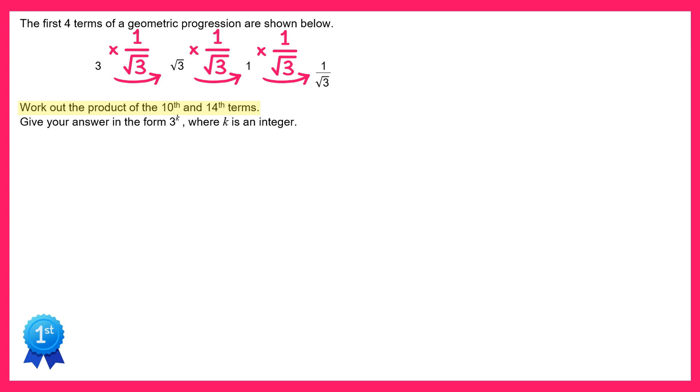This will allow us to write down the nth term of the sequence. To get any term in the sequence we can start with the first term which is 3 and then we just multiply this by 1 over square root 3 however many times we need. To get the second term we multiply it by 1 over root 3 once, to get the third term we multiply it by that twice and so on. So we could actually say this is to the power n minus 1.